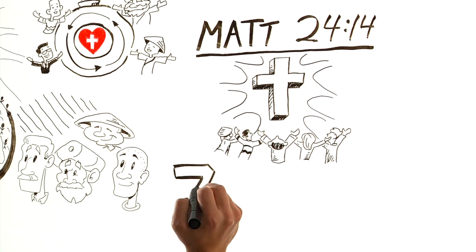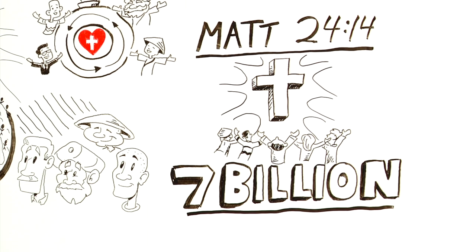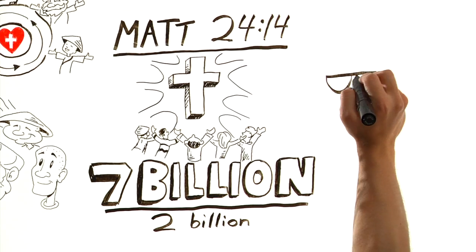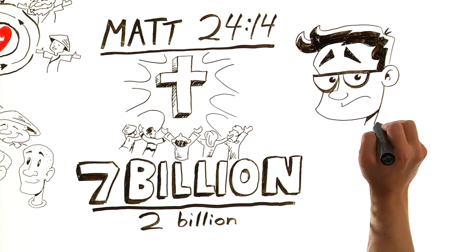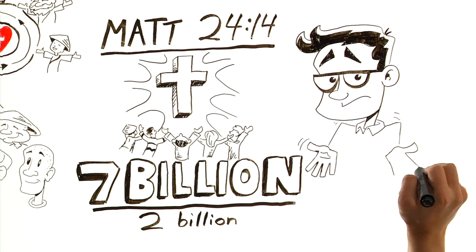Today, there are nearly 7 billion people on earth. Of these 7 billion, only about 2 billion identify themselves as Christians. God's plan is for every person to come to salvation through Jesus Christ. How can we engage the remaining 5 billion with the gospel?